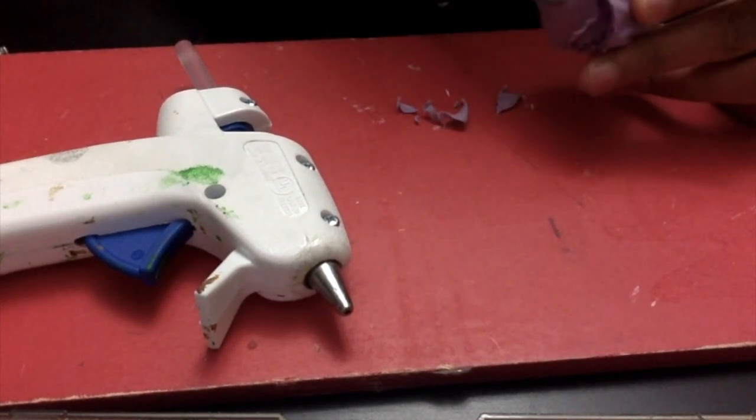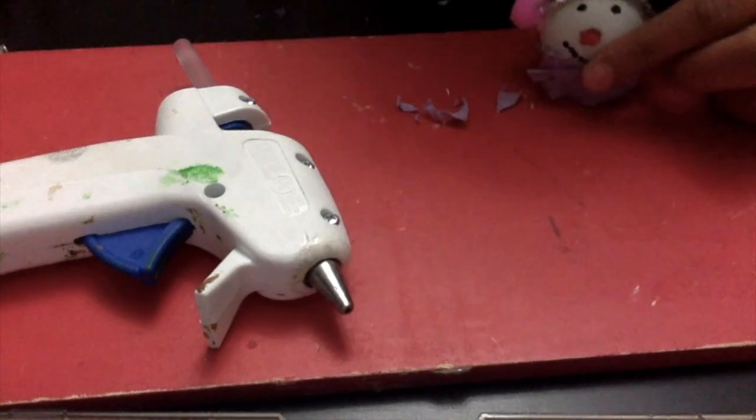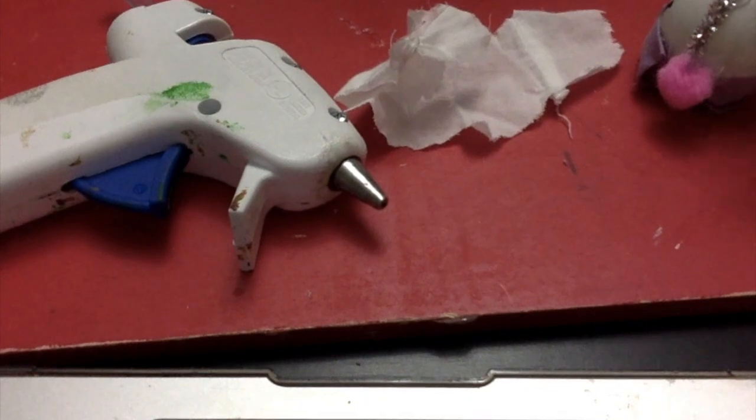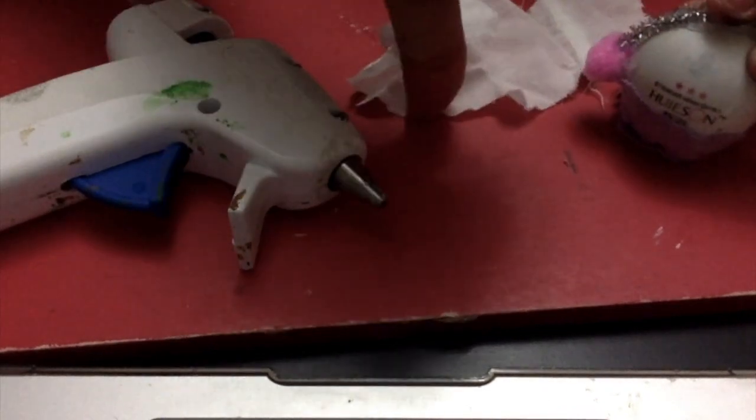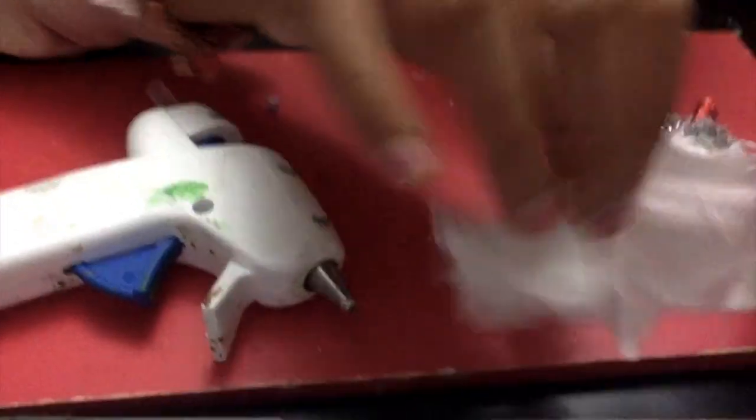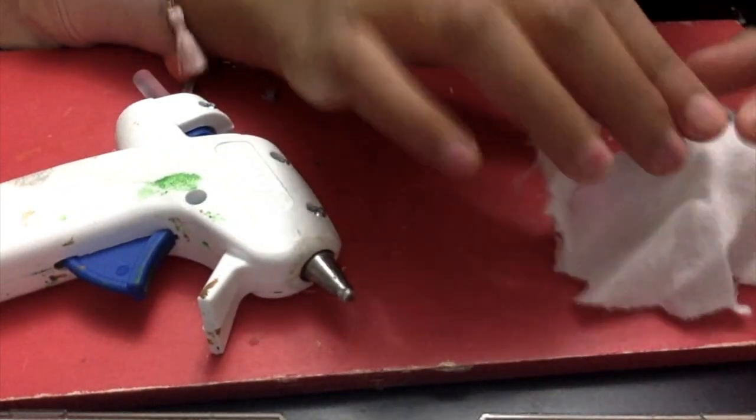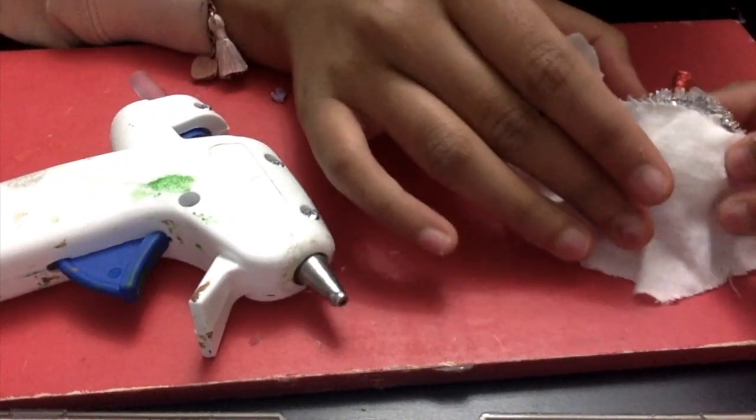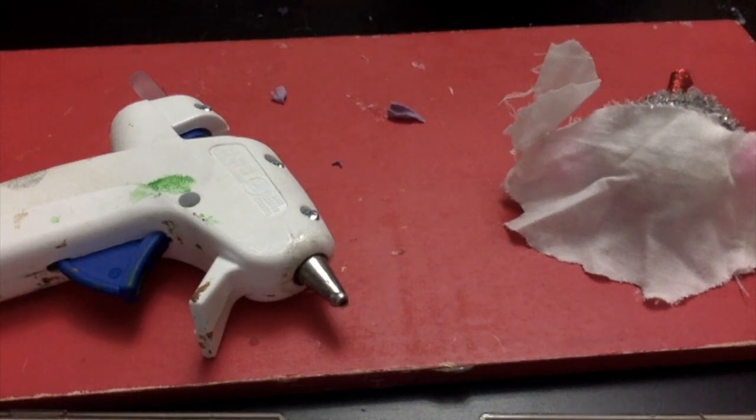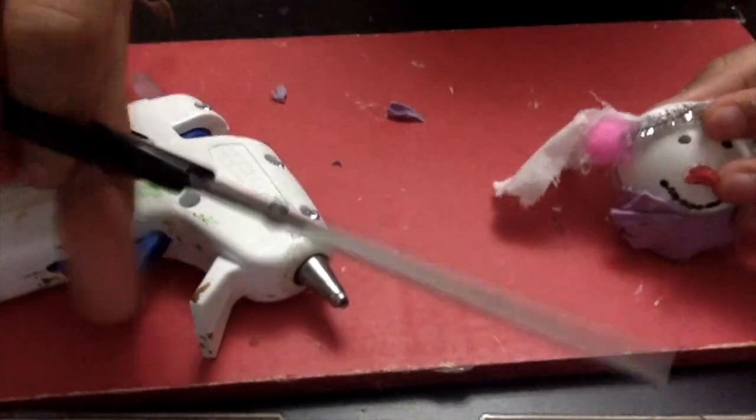For the last step, our ping pong ball has some writing on the back of it which we do not want. So therefore we're going to take some white fabric and hot glue it to the ping pong ball.